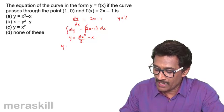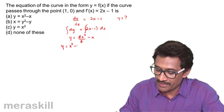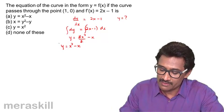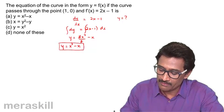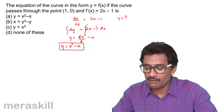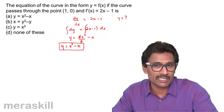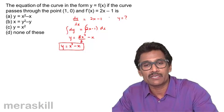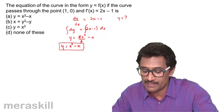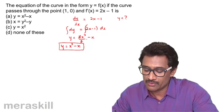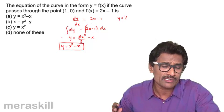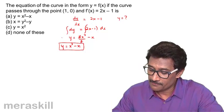So y is equal to x squared minus x. The equation of the curve is y = x squared minus x. The slope has been given; if the slope is given, we know what dy/dx is, and from dy/dx we need to find y. So dy is equal to (2x minus 1)dx — integrate both sides and you get y = x squared. We're using the concept that integration is the reverse of differentiation.